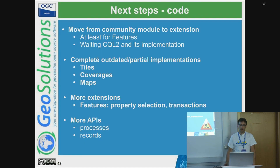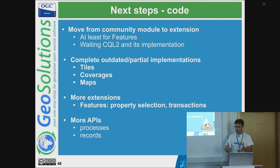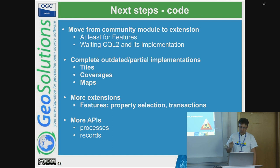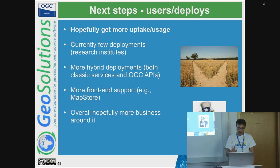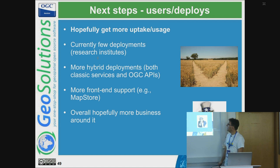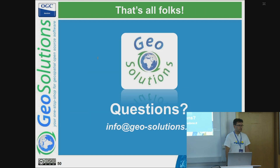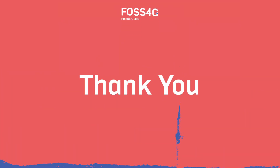Moving forward: the OGC API implementation in GeoServer is currently a community module. It needs to be promoted to an extension, but that requires waiting for the relevant specifications to become stable — you can't have an officially supported module with a specification that keeps changing. For Features, the team is waiting for the CQL2 release as the bare minimum. More implementations need to be completed and uptake is hoped for. Currently a few research and innovation institutes have invested in OGC API development, but there is no uptake in the commercial sector yet. We hope that changes soon. Thank you.